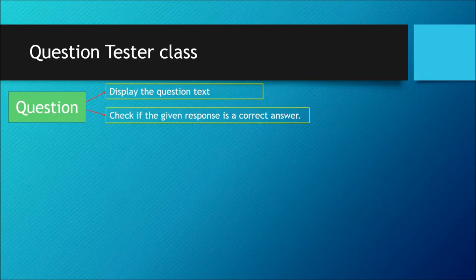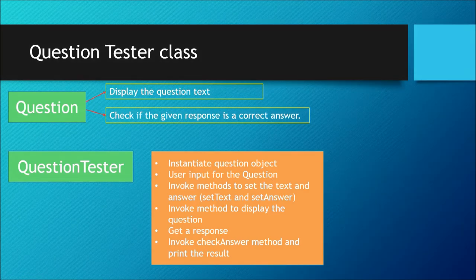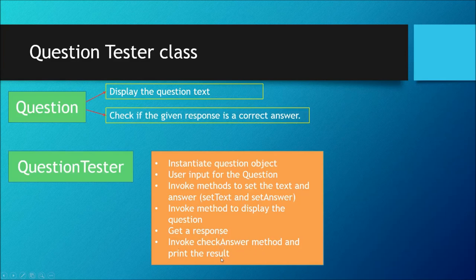QuestionTester class. When we talk about a question, it will have two things: one is display the text of the question, and the second is check if the given response is a correct answer. In a QuestionTester, we're going to instantiate a Question object. You can input a question or ask the user to input a question. Then you invoke methods to set the text and the answer using the setText and setAnswer methods. You can invoke the method to display the question, get a response, and also invoke the checkAnswer method to check if the answer is correct and print the result.